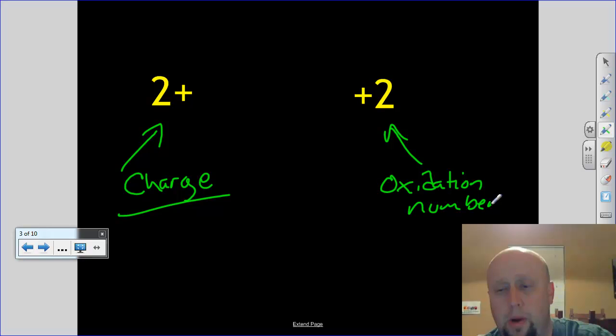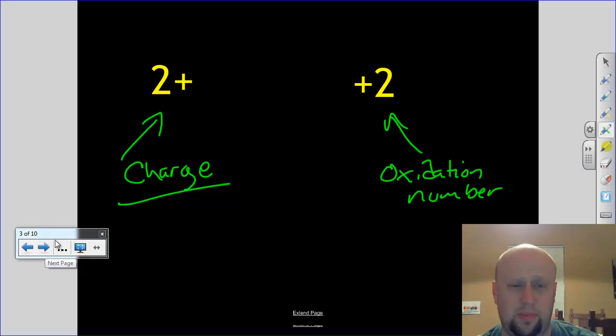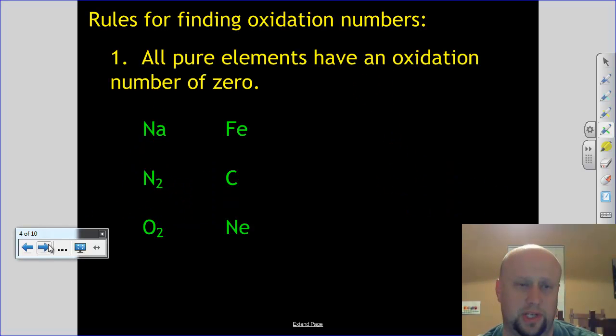Now, most of the time, we're going to treat these two things as though they're the same thing. So it's not really going to matter that much. But just to be perfectly correct, if you're doing charge, the number should be first. If you're doing oxidation number, the sign should be first. So just sort of keep that in mind as we're rolling through the rest of this section.